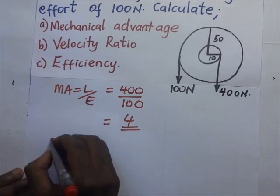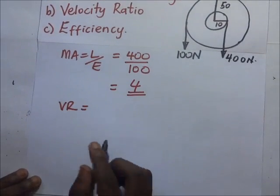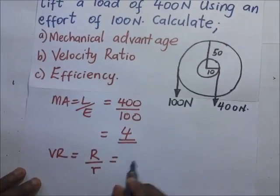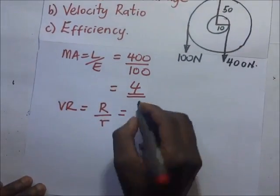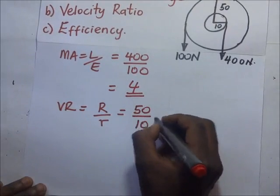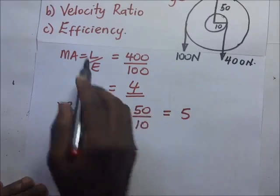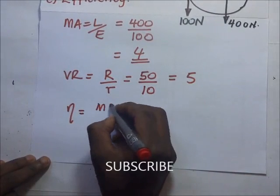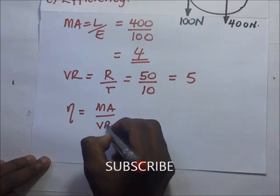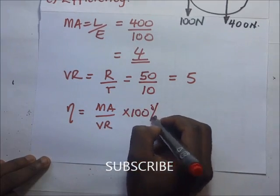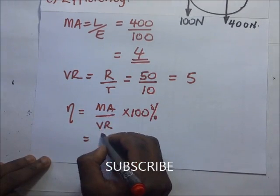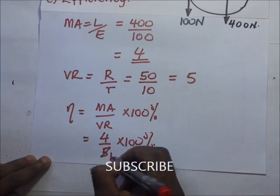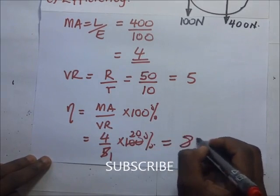For the velocity ratio, using our derived formula, VR equals capital R over small r, which is 50 over 10, giving a velocity ratio of 5. For efficiency, efficiency equals mechanical advantage over velocity ratio, times 100%. That is 4 over 5 times 100%, which gives an efficiency of 80%.